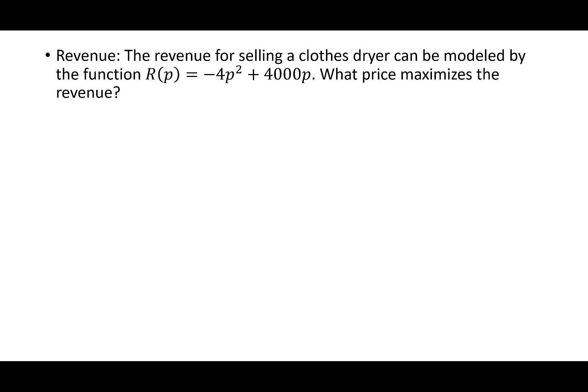Find my value. I'm going to use -b/2a. This is -4000/(2 × -4). This reduces to -4000/-8, which says $500 should be the price of the dryer.